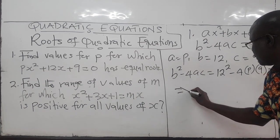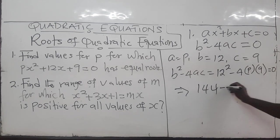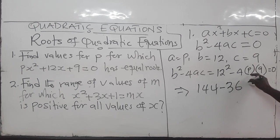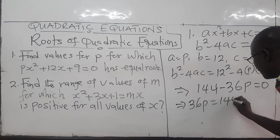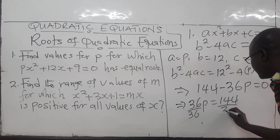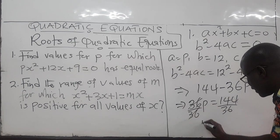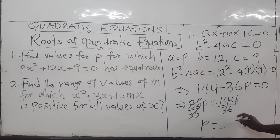Now from here, 12 squared is 144, minus 9 times 4 is 36. So you have 36P. This is equal to zero. So you just have a linear equation to solve for P. This means that 36P is equal to 144 divided by 36, and P will be equal to 144 divided by 36 is equal to 4.